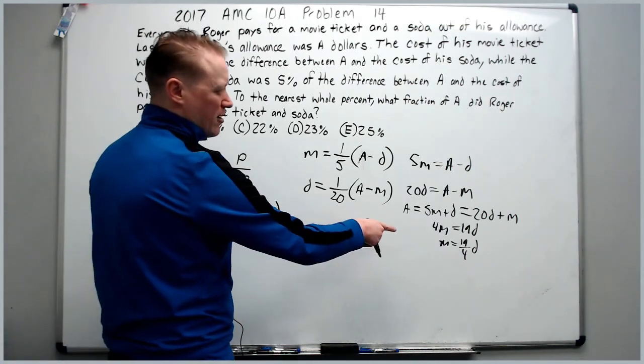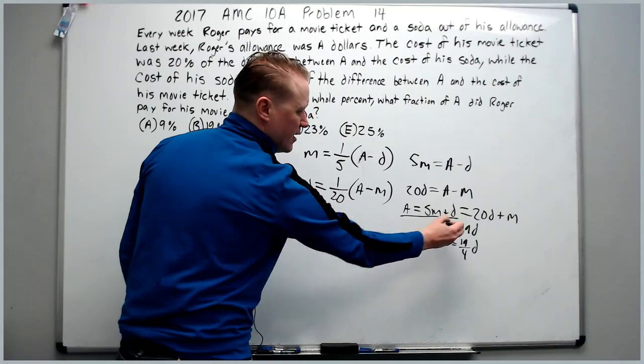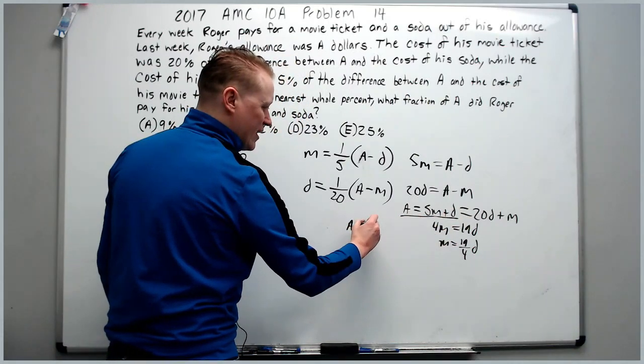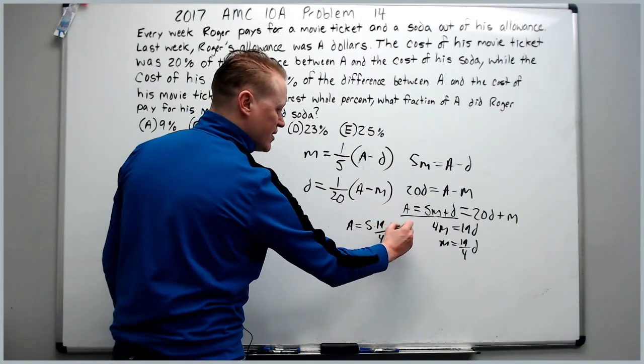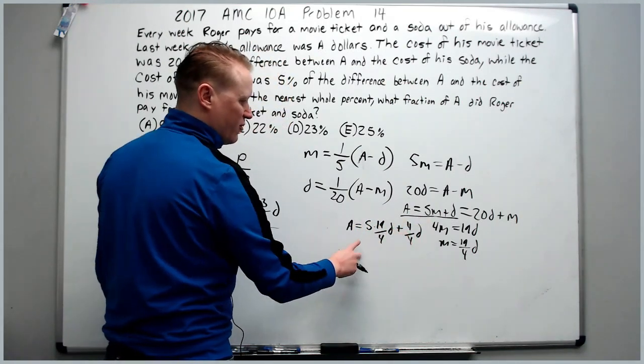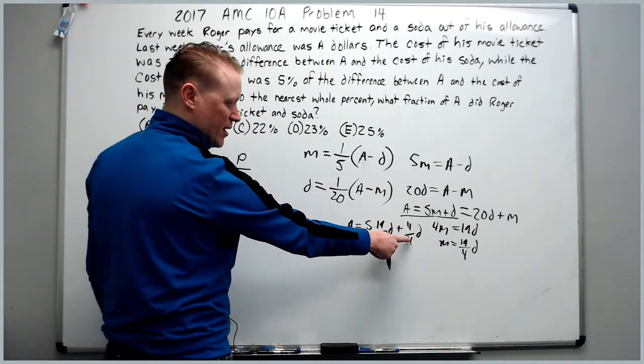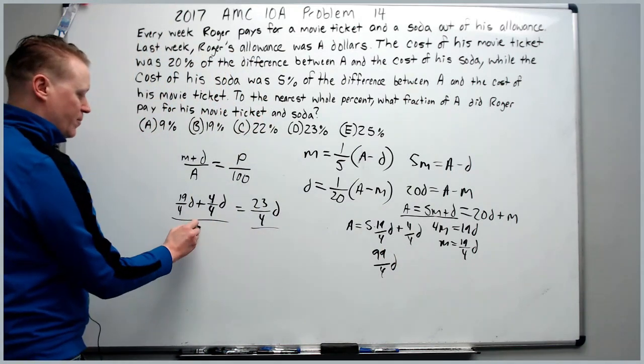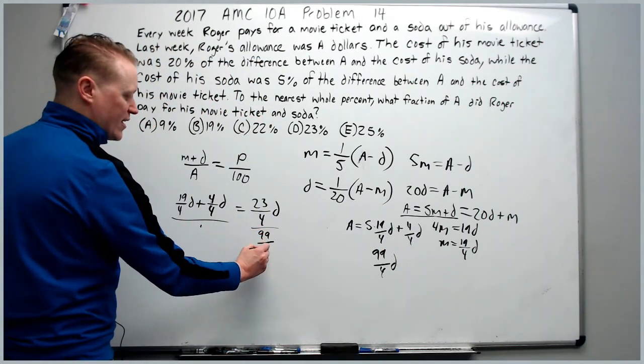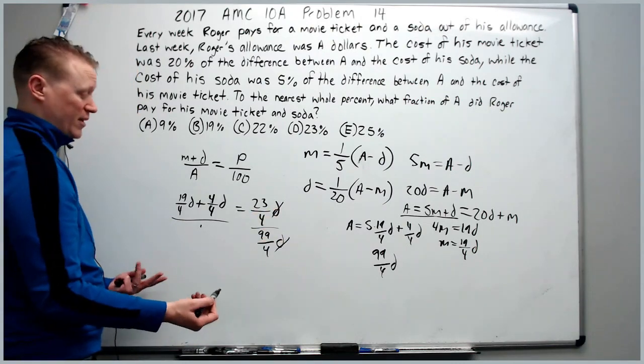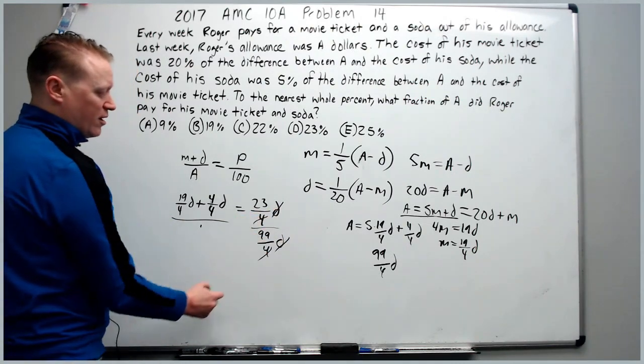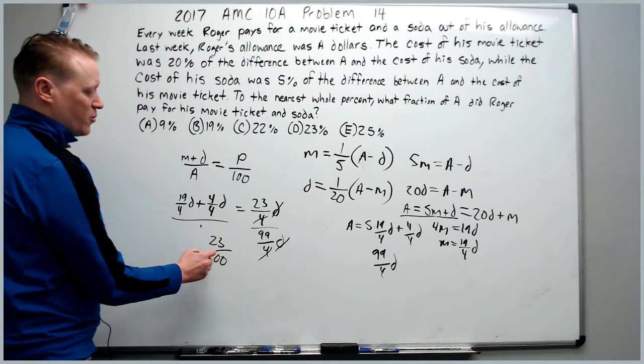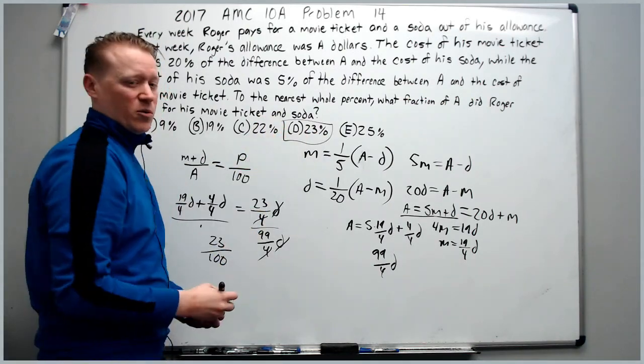Now we need to replace the A. Come back to this equation here and replace the M with 19D/4. You'll get A = 5 × 19D/4, again plus 4D/4. That's 95/4 + 4/4 is 99D/4. Come back and replace—we'll put it here, save time. The Ds cancel, which is our goal. The 4s also cancel. 23/99 is really close to 23/100. So the answer is 23%.